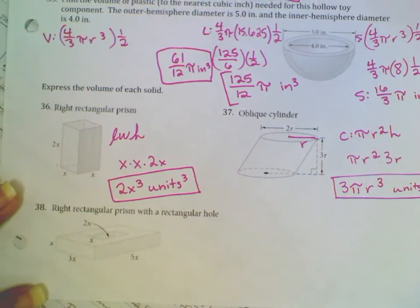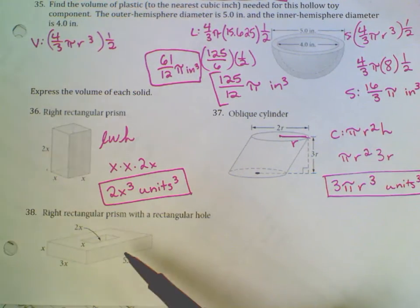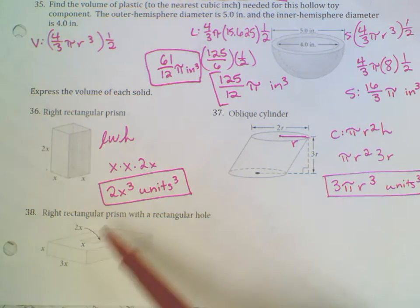For number 38, we have a right rectangular prism with a rectangular hole. So we need to find the volume of the larger and subtract the smaller.